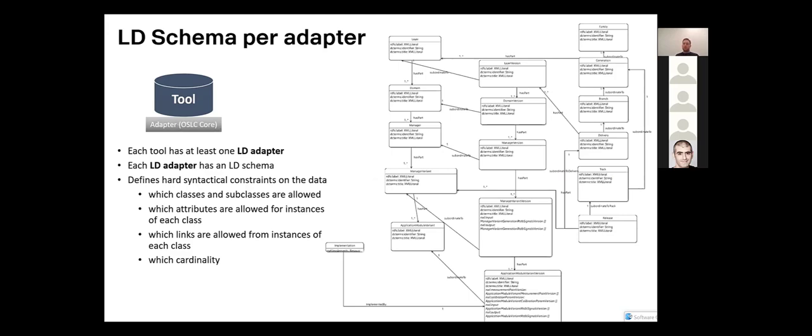And a bit more detail about the linked data schema adapter. So as I said, each tool has one adapter, at least one adapter actually could have many. And each adapter has a corresponding schema, so something like this. And these schemas define the hard constraints in the data. So whatever comes out of the adapter, implicitly from a certain tool must conform to whatever we have specified here. So basically classes, soft classes, relations, cardinalities, and stuff like that specified here.